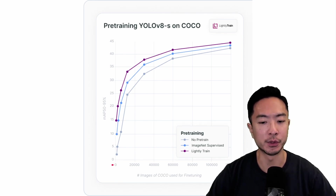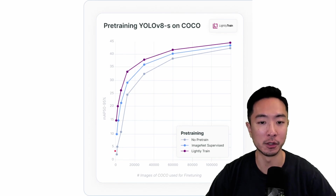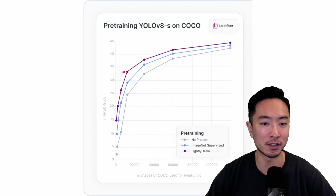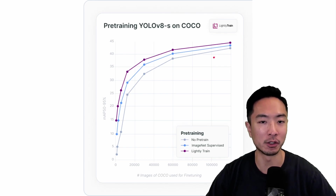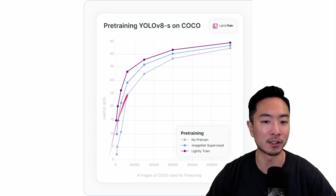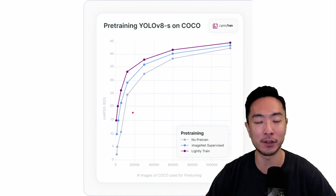With zero COCO images for fine-tuning, Lightly Train is already at 15% MAP, whereas no pre-training is all the way down to about 3. With just a little more data, Lightly Train quickly increases to around 30-something, while no pre-training is still stuck around 25. Over time, with more and more data, all methods eventually converge around 40 to 45. But the key takeaway is that if you want to save time — meaning less fine-tuning, which means faster deployment — Lightly Train gets you there more quickly.